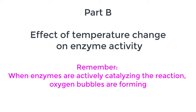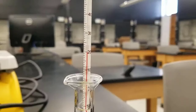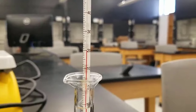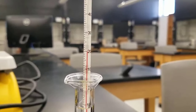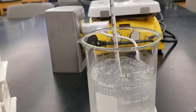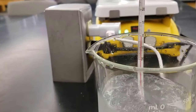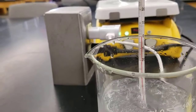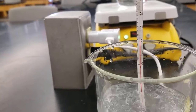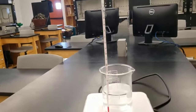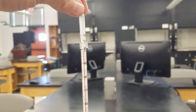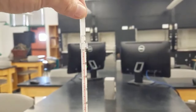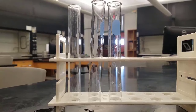For Part B, we're going to look at temperature change on enzyme activity. The enzyme is active if we see bubbles. First, I've got some room temperature water — write down the temperature you measure there. Then I have some ice water, and again write down the temperature you see. Finally, we have some boiling water. So we've got room temperature, freezing, and boiling — three temperatures, three test tubes.